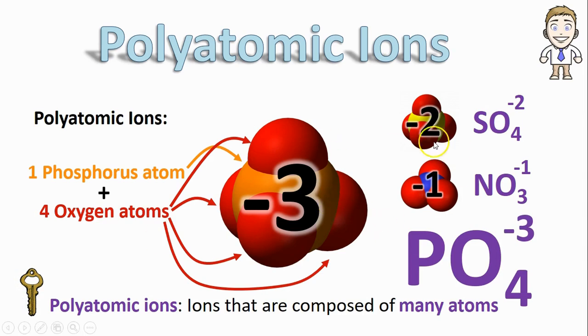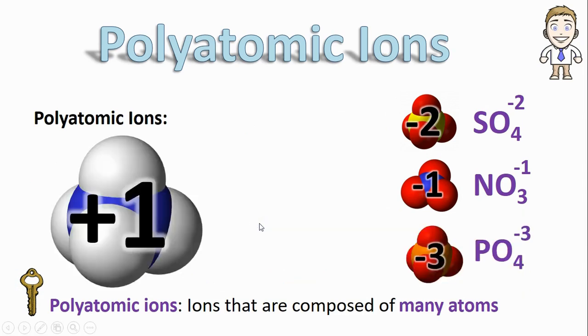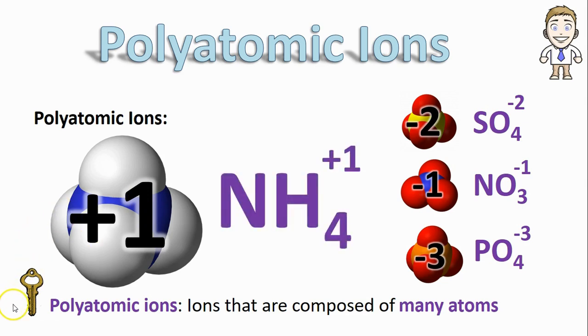Now, you might notice that all of these examples have negative charges. They're all anions. And that's true for most polyatomic ions, but it's worth mentioning that some can be positive too. This particular example is NH4 and it has a positive one charge.